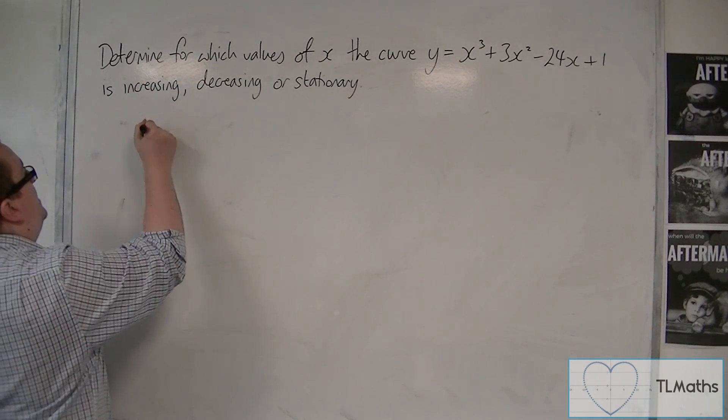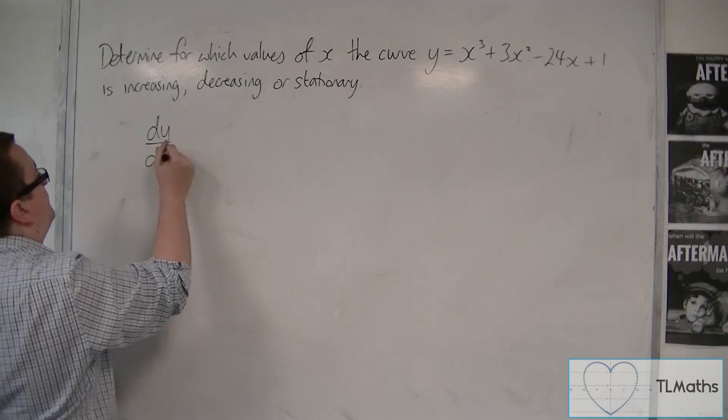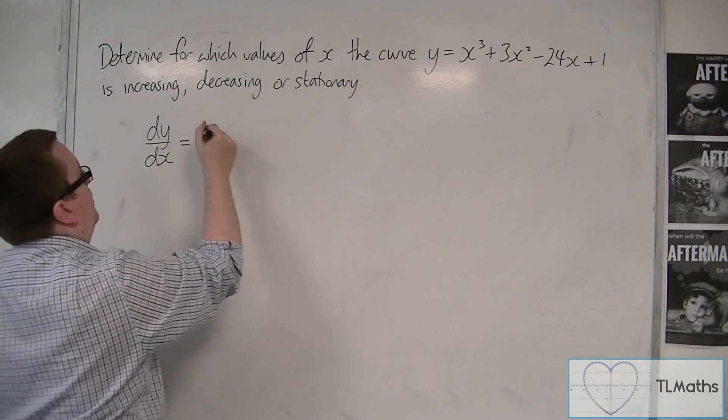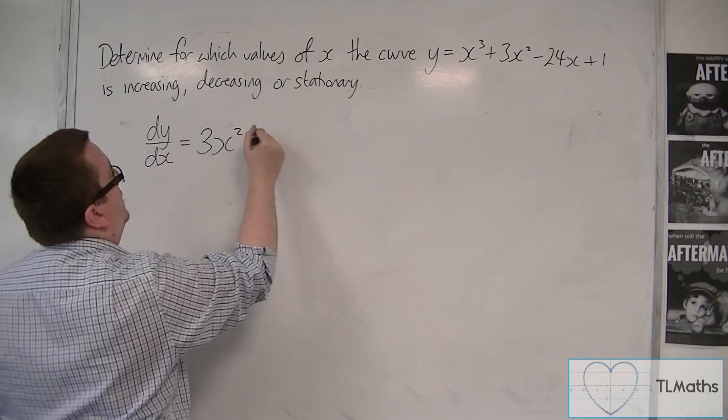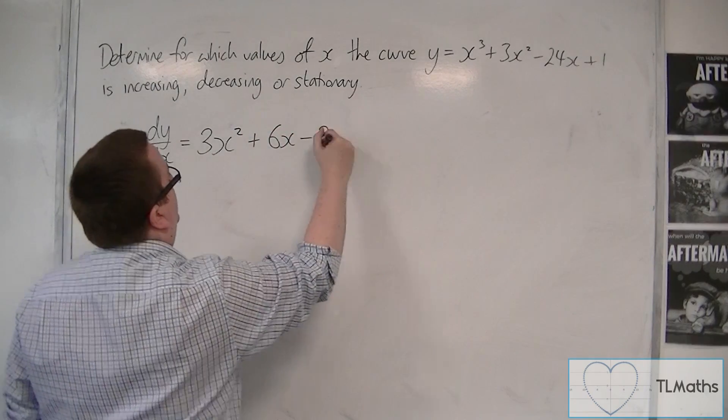So we need to find dy by dx first. We differentiate this. We're going to get 3x squared plus 6x minus 24.